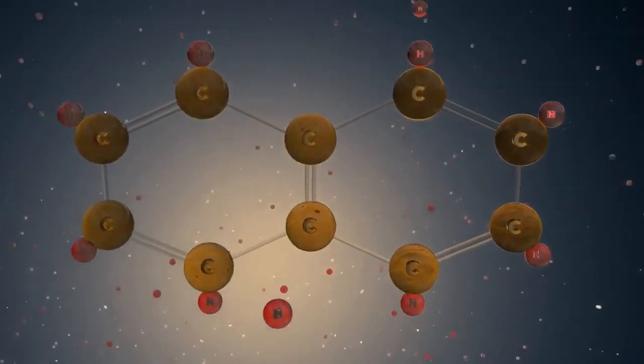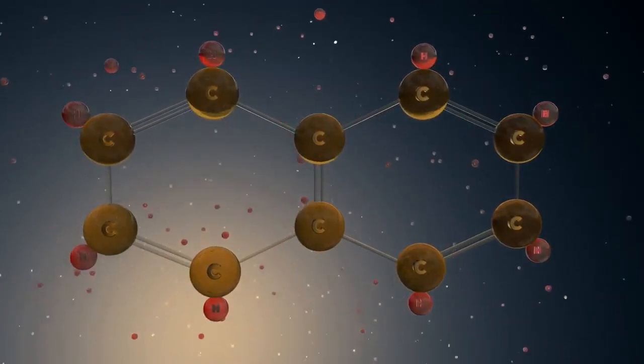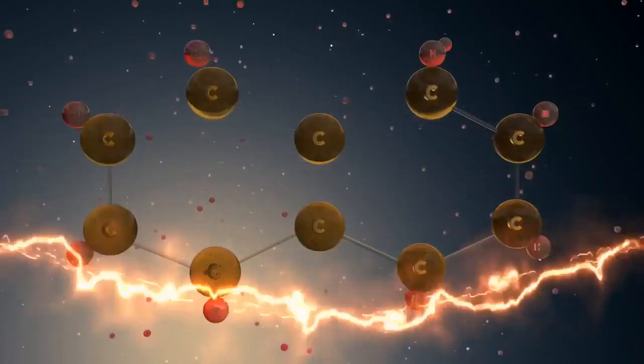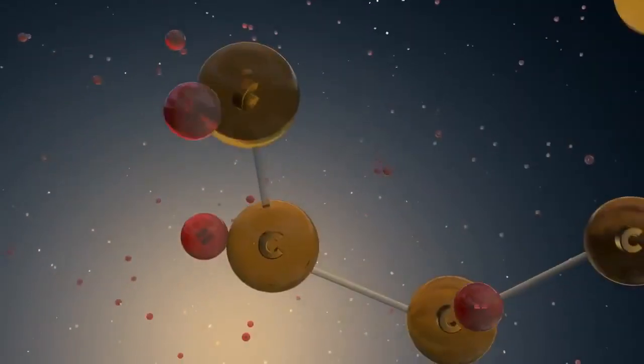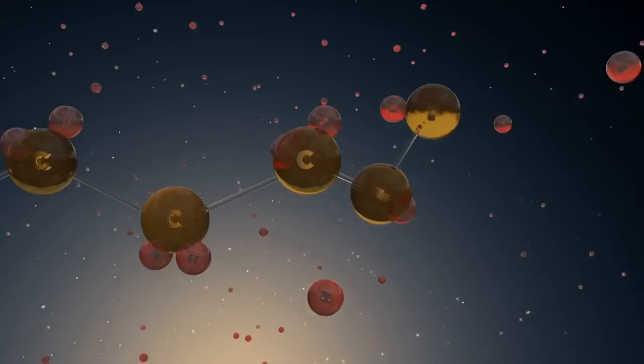The number of carbon atoms in naphtha is about the same as the number found in gasoline, but their structure is more complex. Reforming rearranges the naphtha molecule, turning it into a usable, gasoline-like molecule.